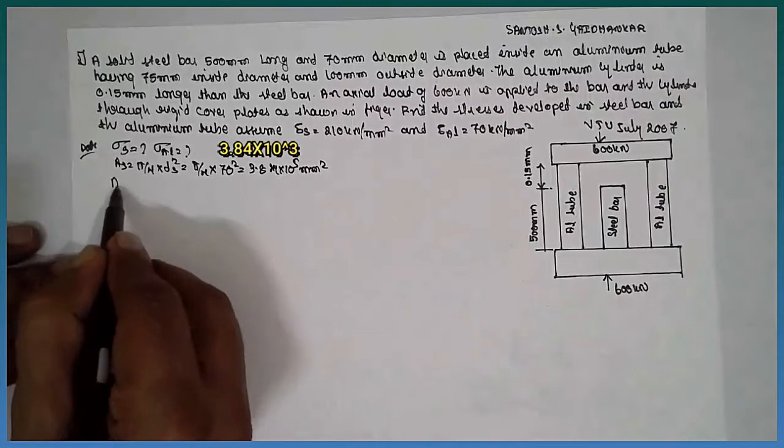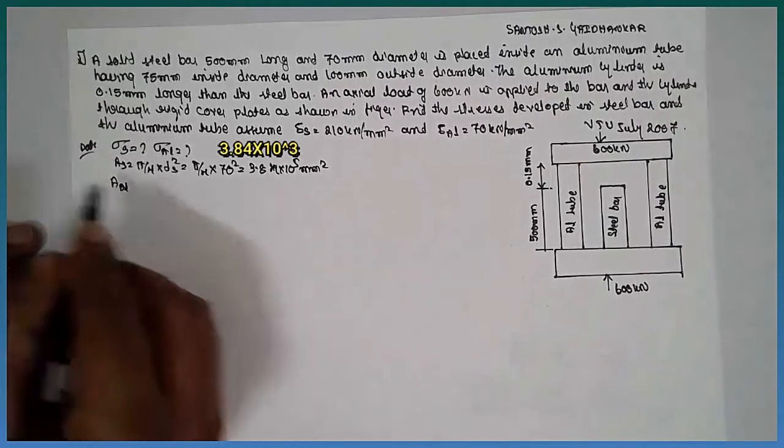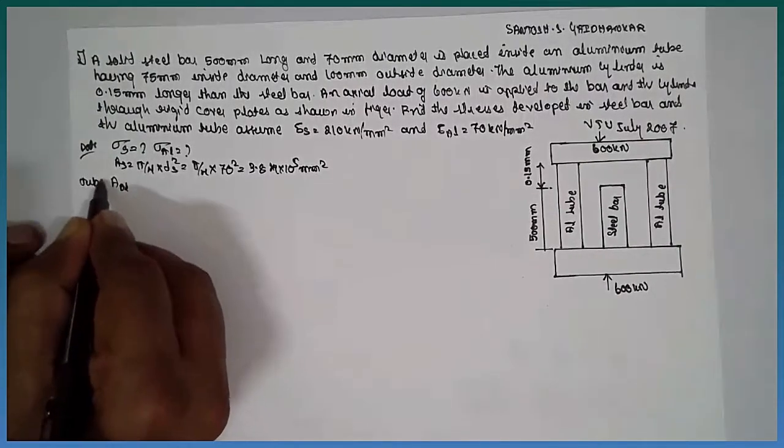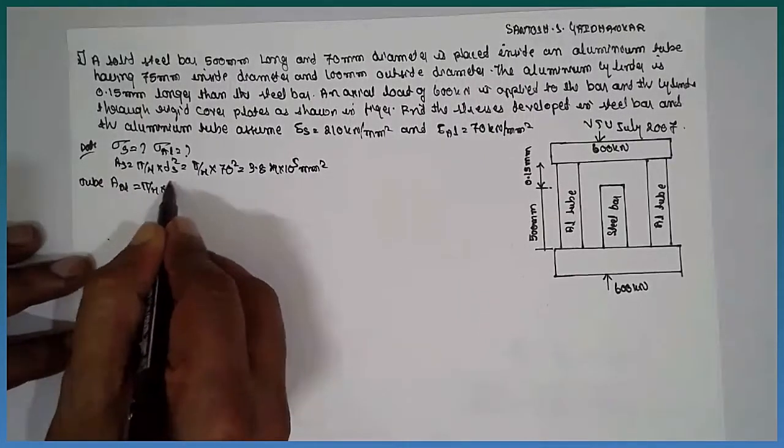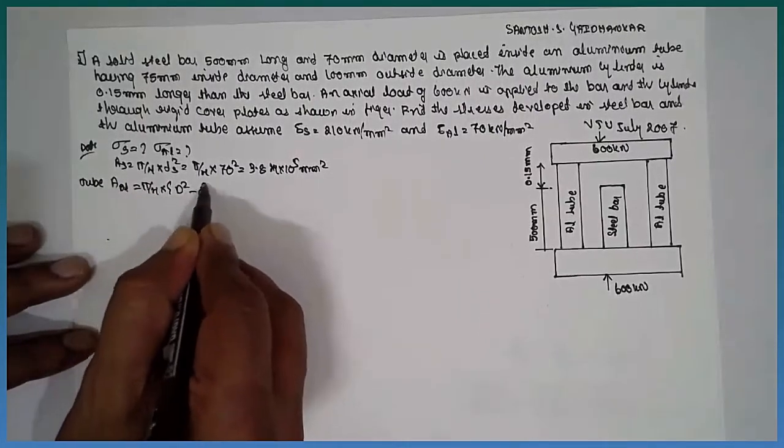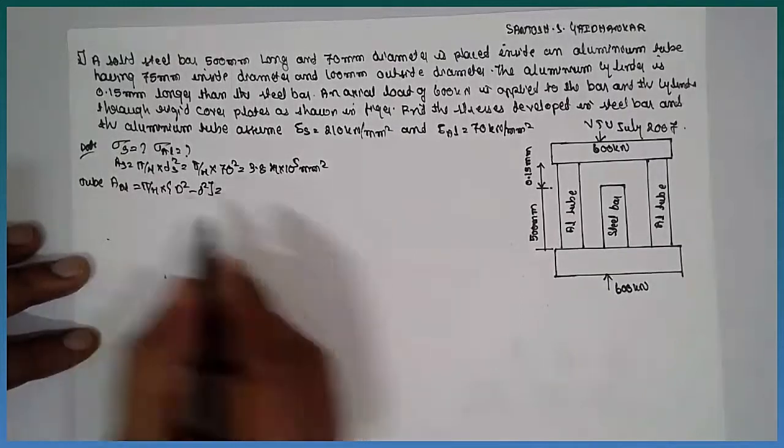Next you have to find out the diameter of aluminum. In terms of this is tube, this is tube. Formula will be pi by 4 into larger diameter minus smaller diameter.